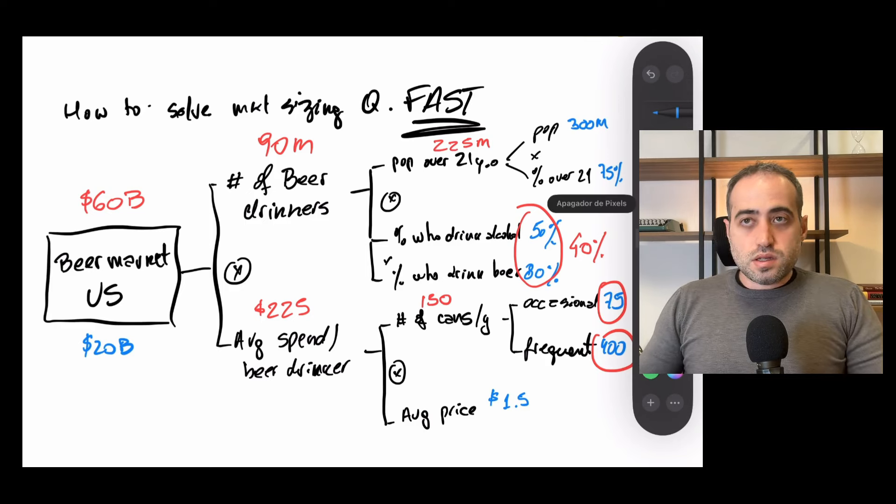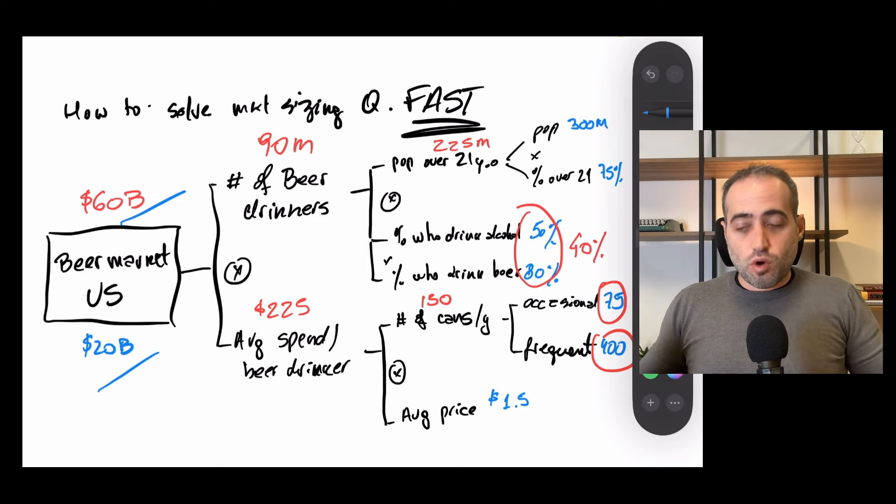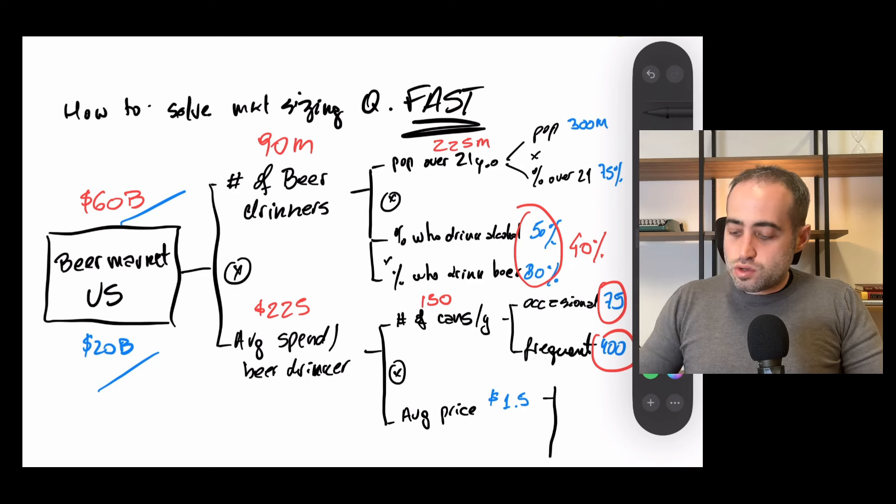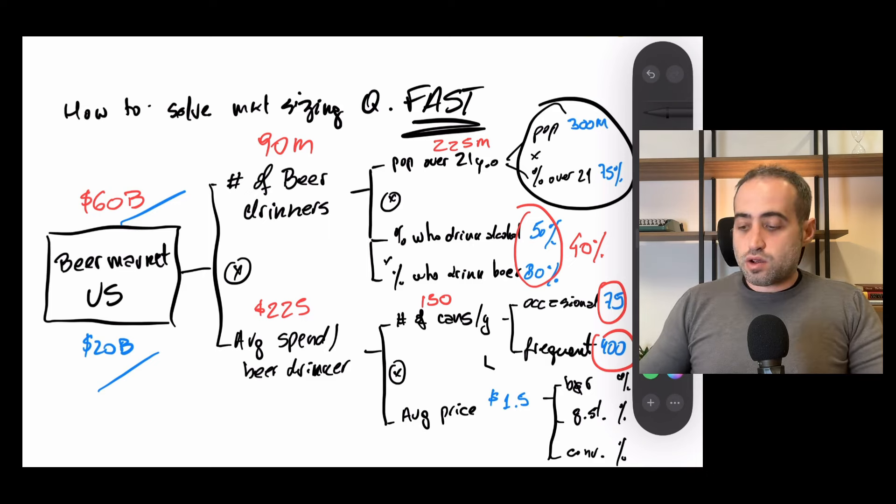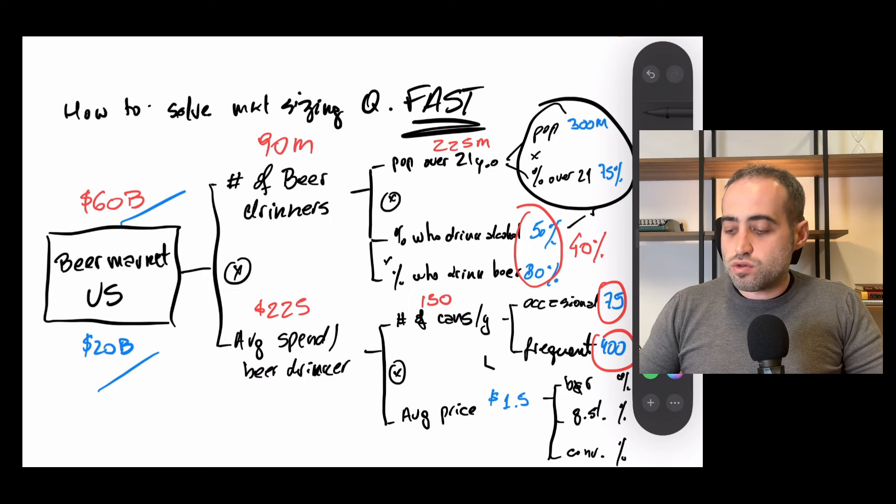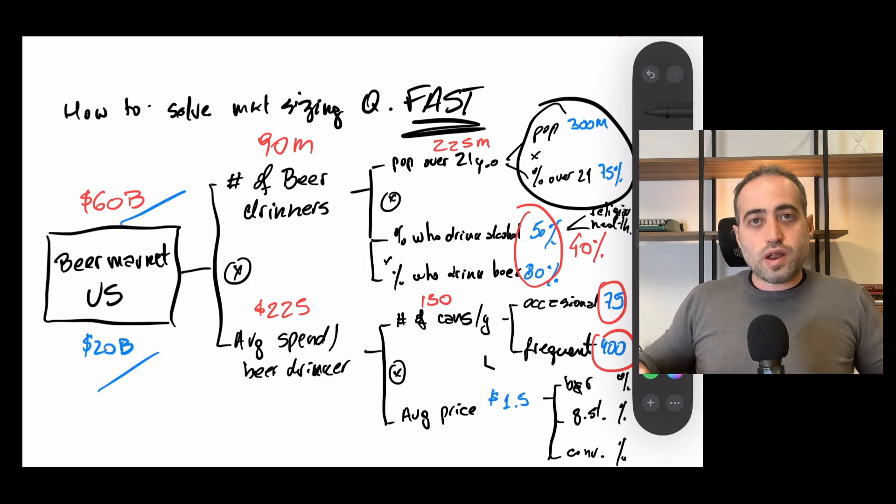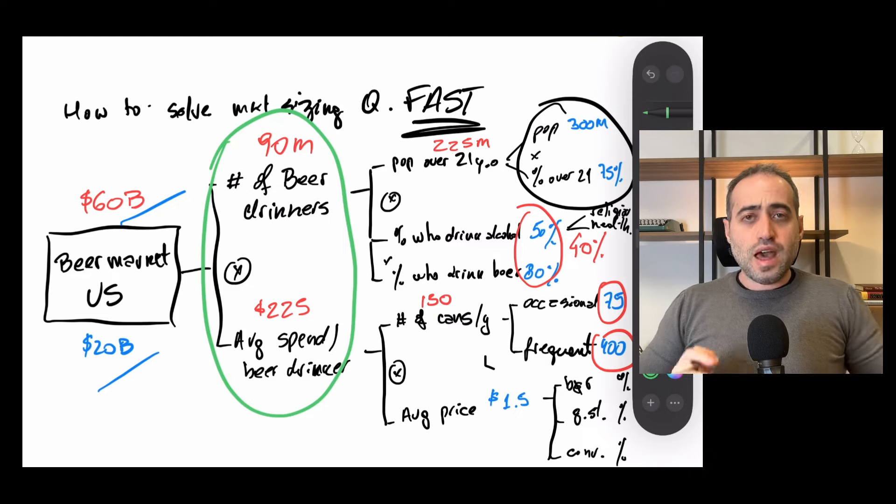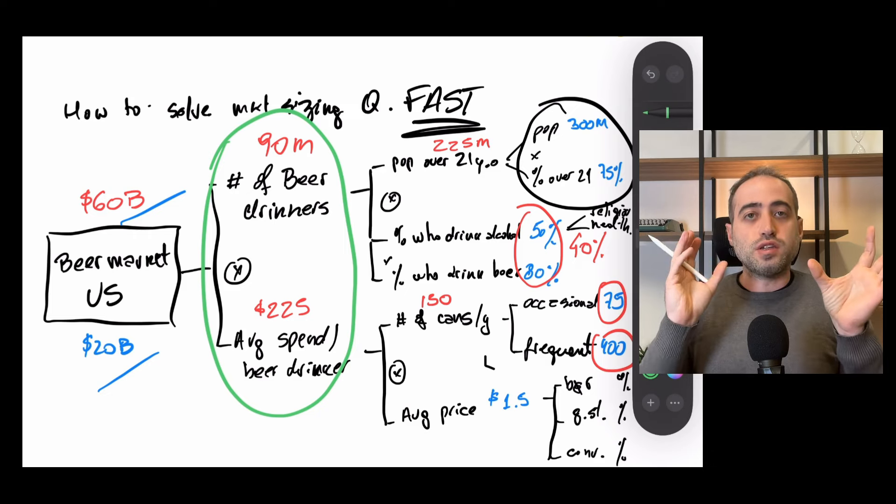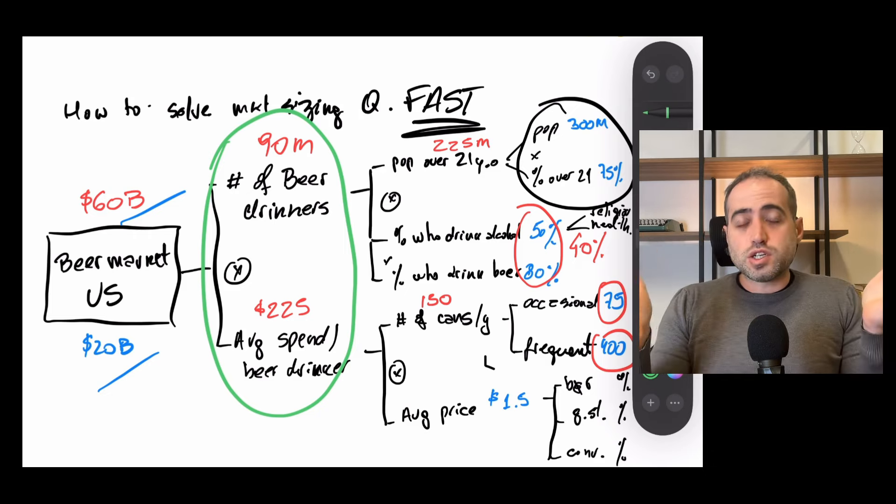So basically how does this whole thing work? I took a lot more time and I got to a different result. I could spend even more time. Like I could open this up into channels, right? So bars and restaurants, grocery stores, convenience. And then I'd have a percentage for each one. I could work a lot more on this. I could open up the percentage who drink alcohol or who don't drink alcohol into religious, health reasons, stuff like that. I could go into a lot more depth, or I can just use the lower depth thing. And this is the difference between taking a lot of time and taking just a little bit of time for solving an estimation case.